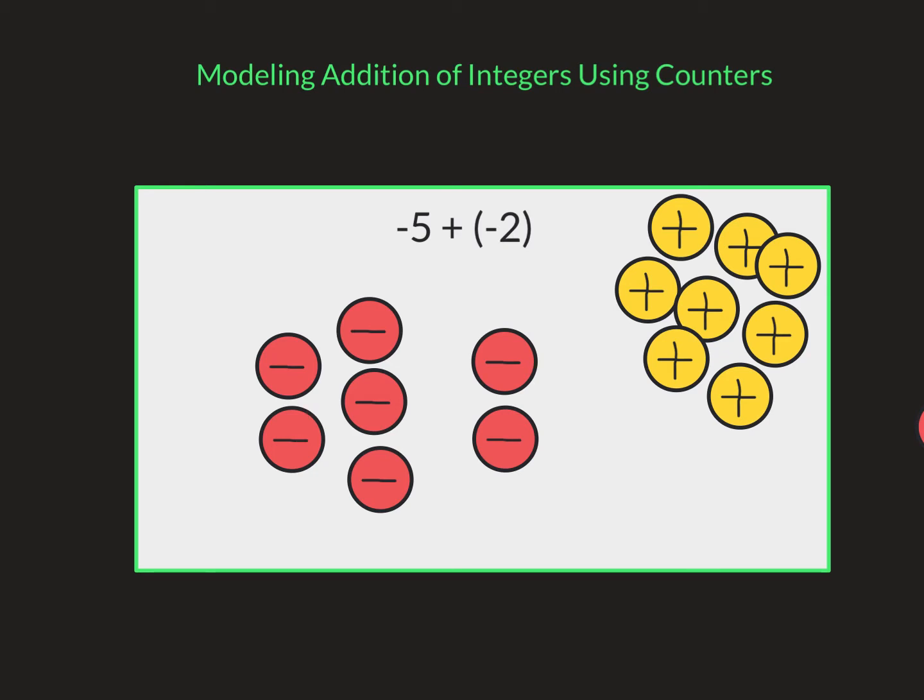I've got one, two, three, four, five, six, seven negatives. So my answer to this one would be negative seven. Pretty simple. Started with negative five or five negative chips plus two negative chips, so we get negative seven.